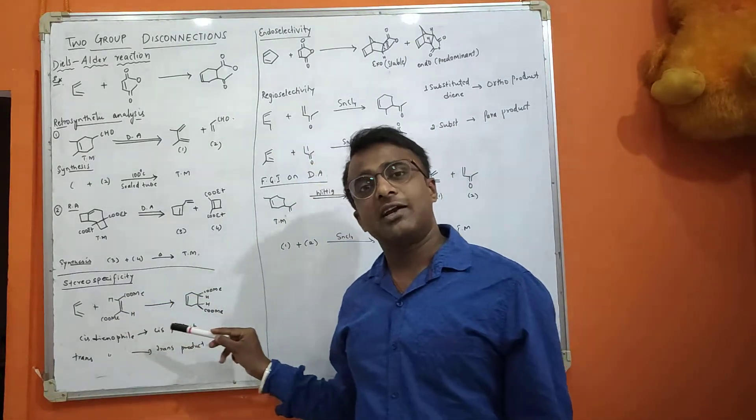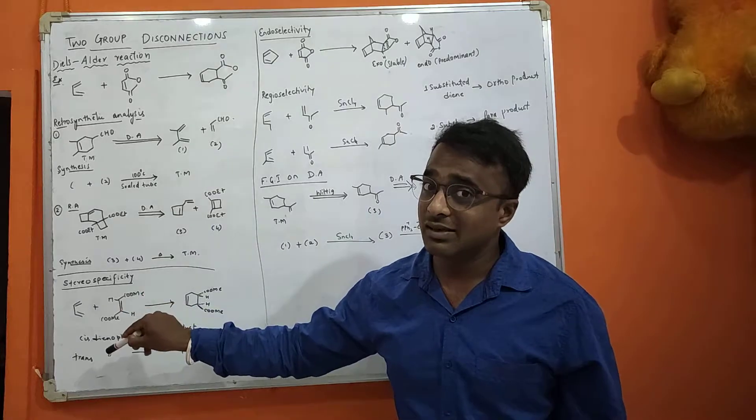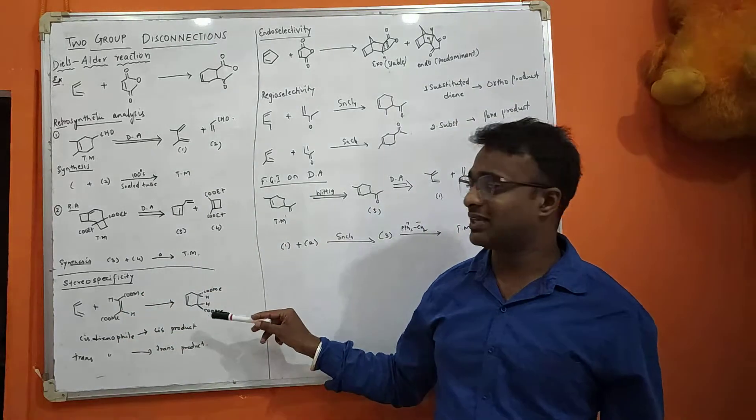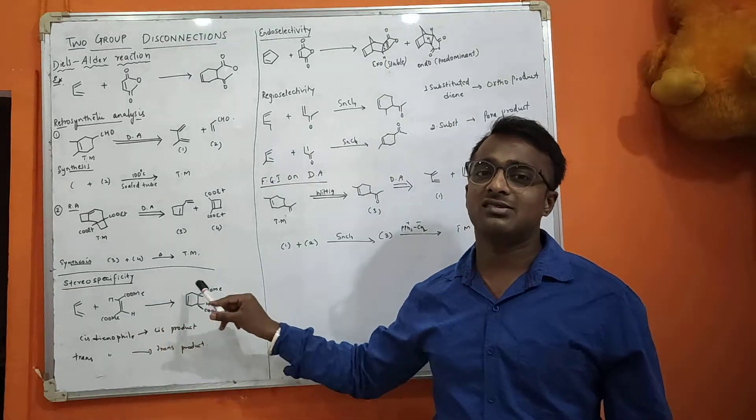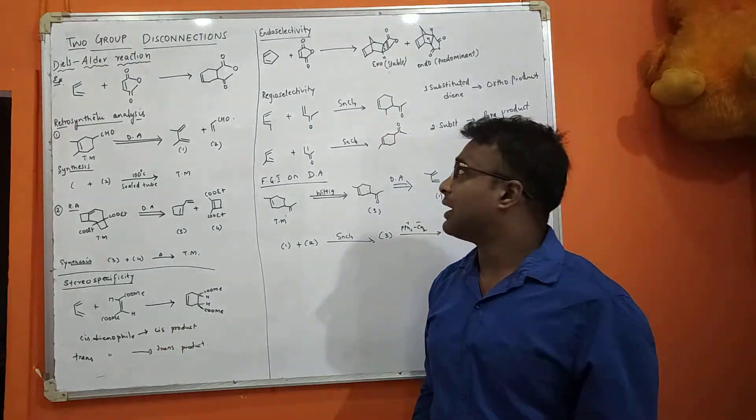When you use trans dienophile, you will get trans product. When you use cis dienophile, you will get cis product. This is known as stereospecificity. The stereochemistry of the dienophile is retained in the product.